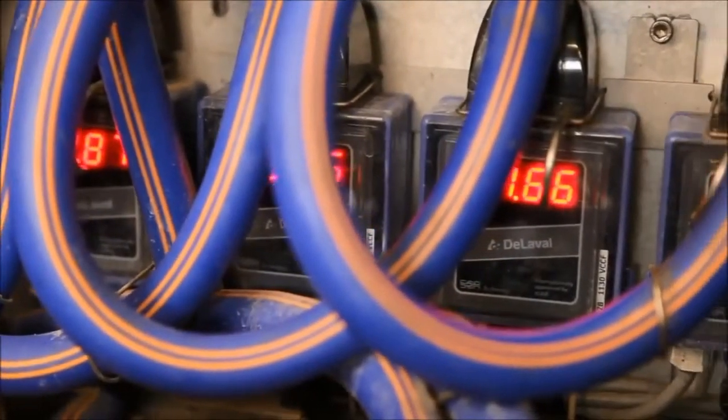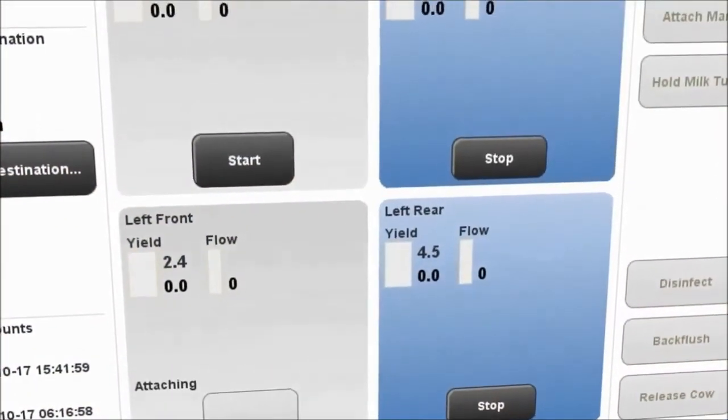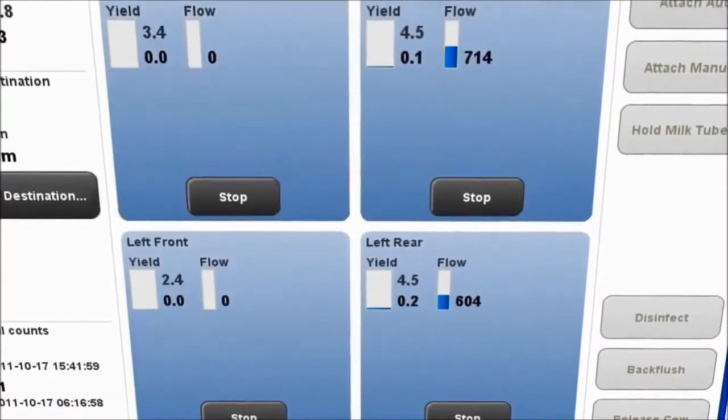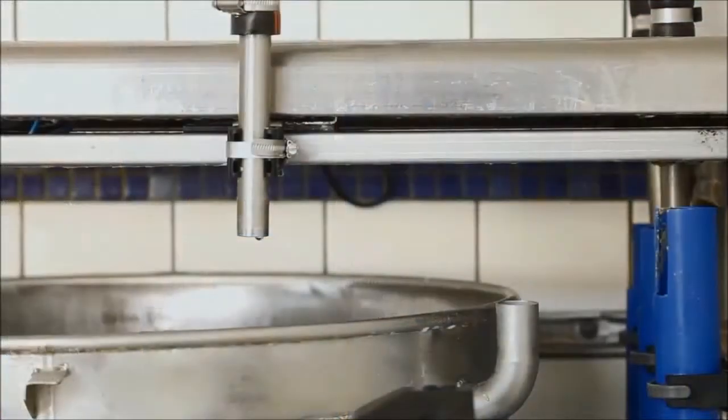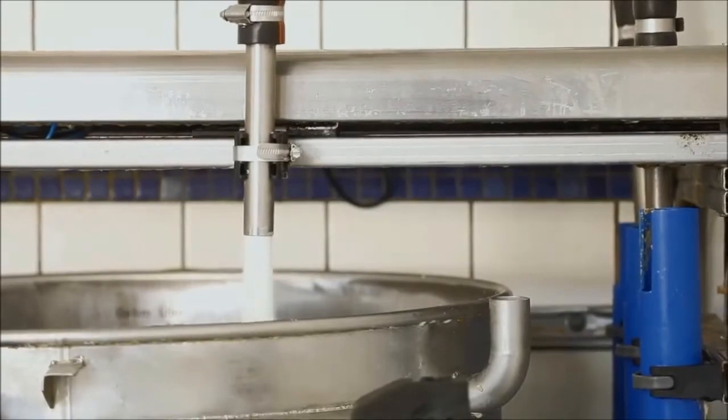Four ICAR approved and accurate quarter-milk meters monitor deviations and abnormalities in flow rates, yields, blood, and conductivity levels. Abnormal milk is therefore automatically diverted away from the main tank.